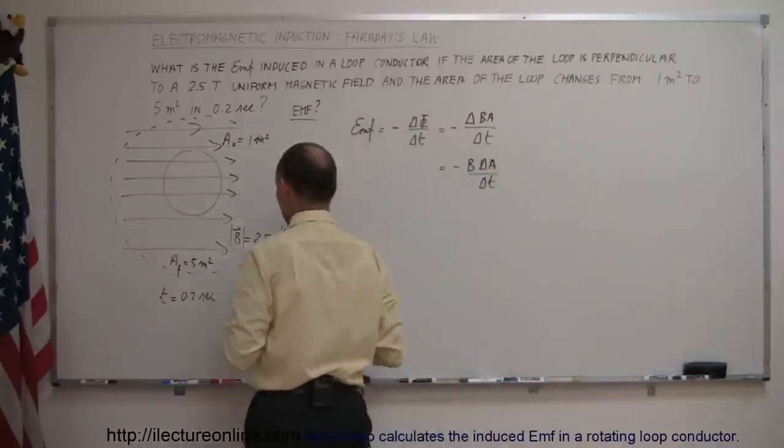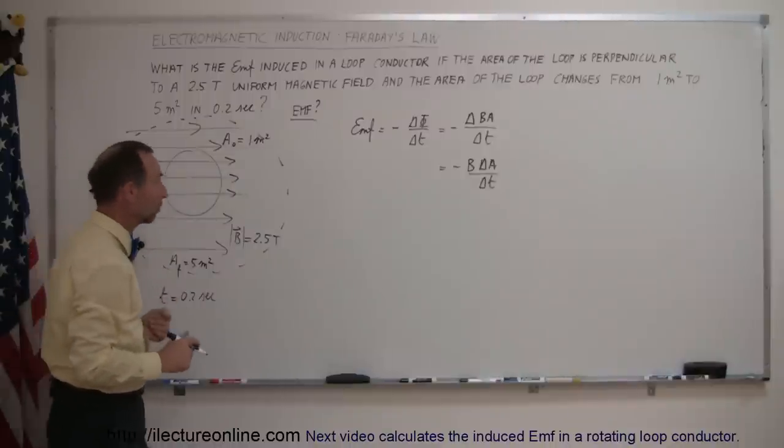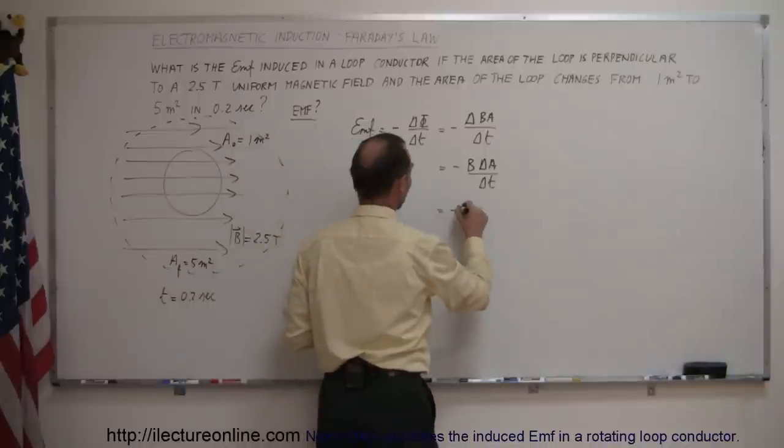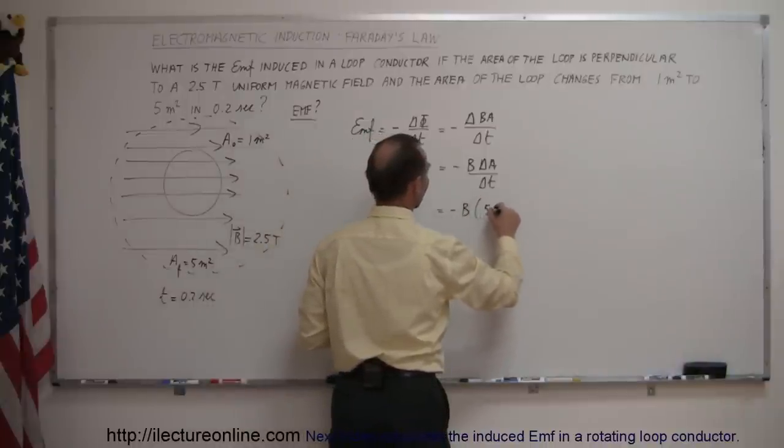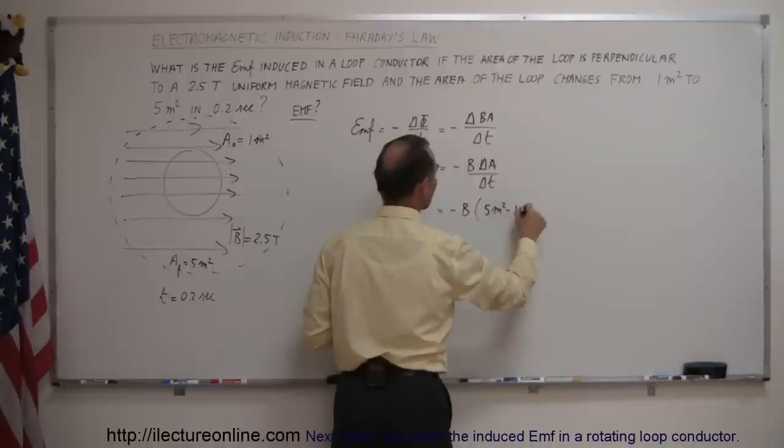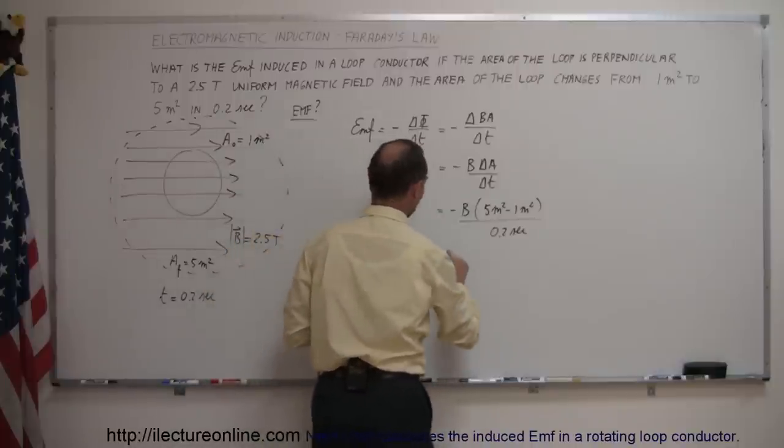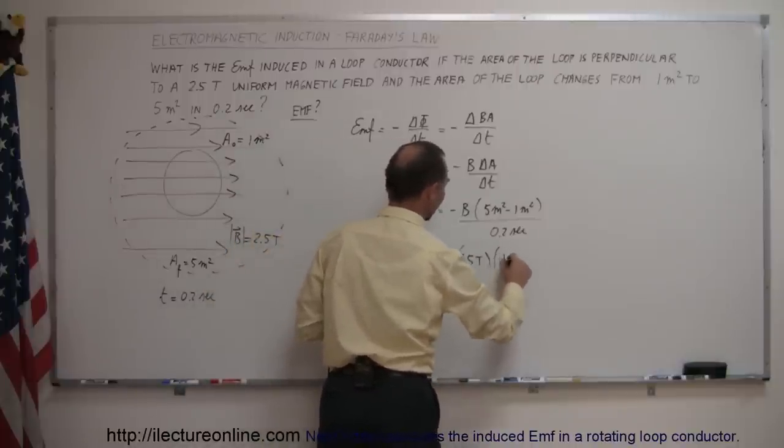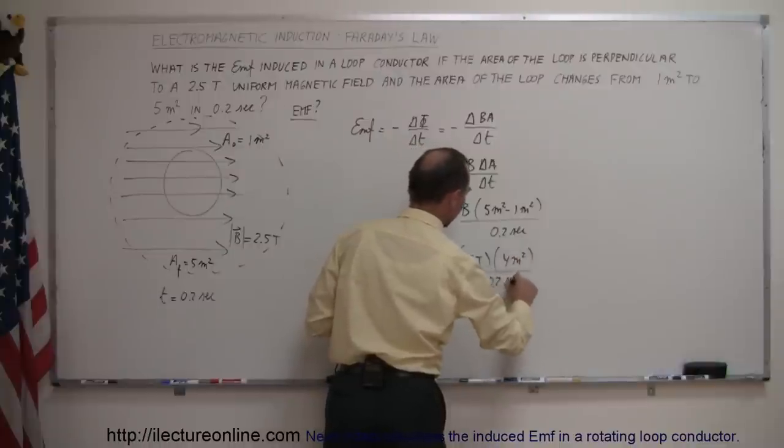And that we know—it went from 1 square meter to 5 square meters in 0.2 seconds. So this is equal to minus B times 5 meters squared minus 1 meter squared, which is the change in the area, over the 0.2 seconds. And then, of course, the B field was 2.5 teslas, so this is equal to minus 2.5 teslas times 4 meters squared divided by 0.2 seconds.